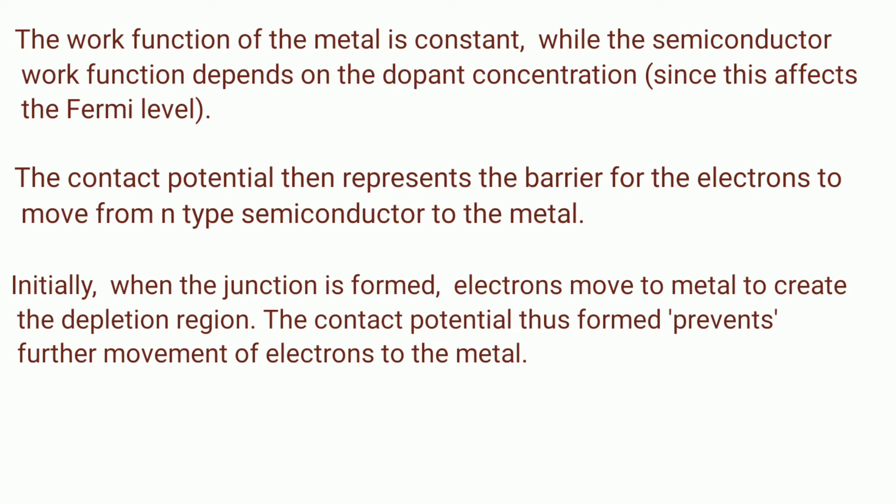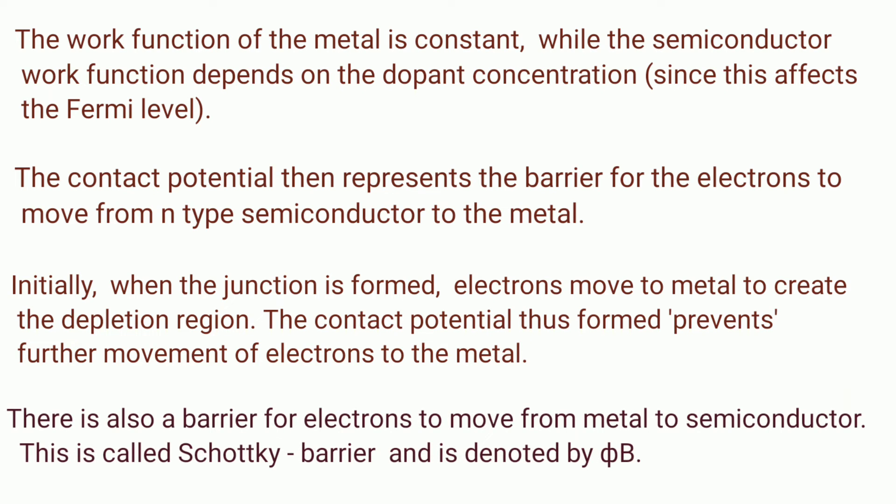The contact potential represents the barrier for the electrons to move from N-type semiconductor to the metal. Initially, when the junction is formed, electrons move to the metal to create the depletion region. The contact potential thus formed prevents further movement of electrons to the metal. There is also a barrier for electrons to move from metal to semiconductor.